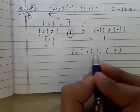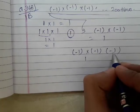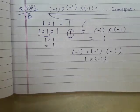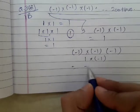Now, if I multiply these two minus 1, I will get plus 1. Then I have to multiply this plus 1 with minus 1. In this case, I will get minus 1.